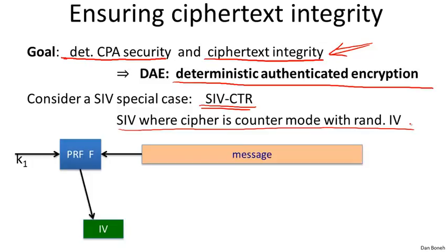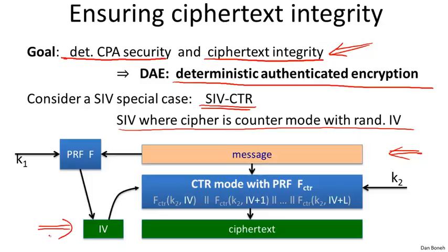Let's look at a special case of SIV when the underlying encryption scheme is randomized counter mode — we'll call this SIV-CTR. We take our message, apply a PRF to derive an IV, and then use that IV to encrypt the message using randomized counter mode, evaluating F_CTR at IV, IV+1, up to IV+L, and XORing that with the message to get the final ciphertext. During decryption, we add one more check that provides ciphertext integrity: we decrypt using the given IV to get a candidate plaintext, then reapply the PRF F to this message. If the message is valid, we should get the same IV that was supplied as part of the ciphertext; if we get a different IV, we reject the ciphertext.